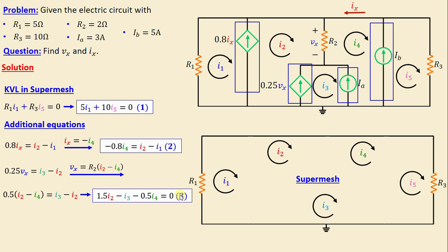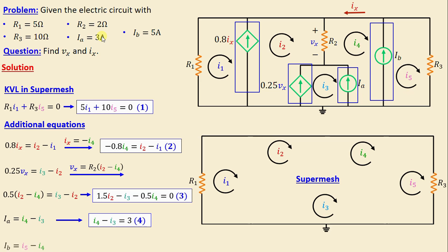Let's move on now to the independent current source Ia. We can write Ia = I4 − I3, that means I4 − I3 = 3 amps, and I will call this equation four. Let's move on to the independent source Ib. We can write Ib = I5 − I4, that means I5 − I4 = 5 amps, and I will call this equation five.